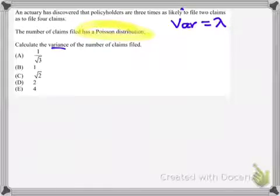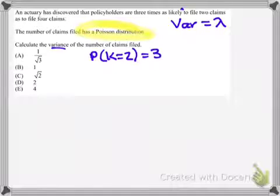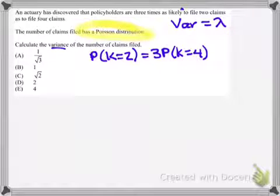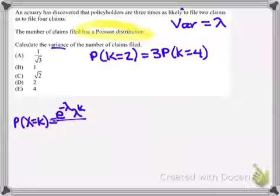So let's see what we've got here. We know that policyholders are three times as likely to file two claims as four claims. And what that means, algebraically speaking, is that the probability that K is equal to two is three times the probability that K is equal to four. So we'll begin there. Now, I don't actually know lambda here, but I do know the general probability density function for the Poisson. And that is the probability that X is equal to K is equal to E to the negative lambda, lambda to the K over K factorial. And that is what I'm going to use here to solve this problem.